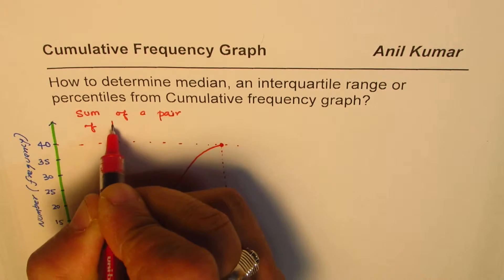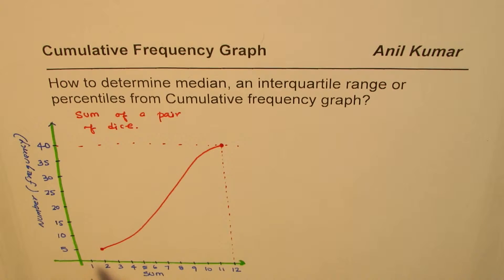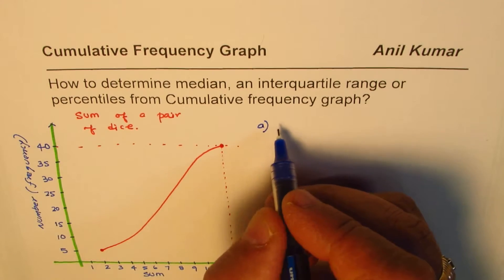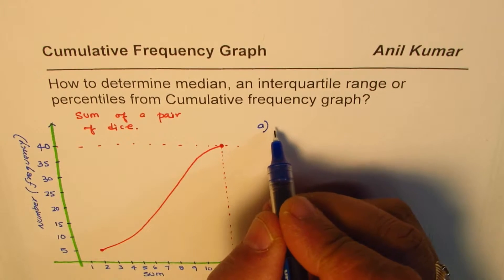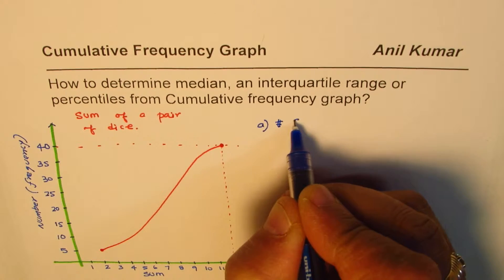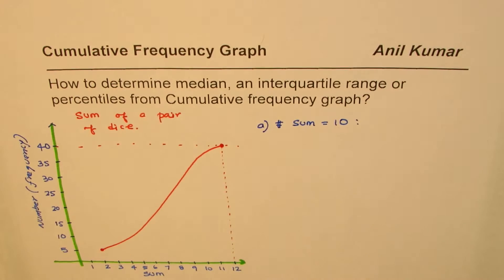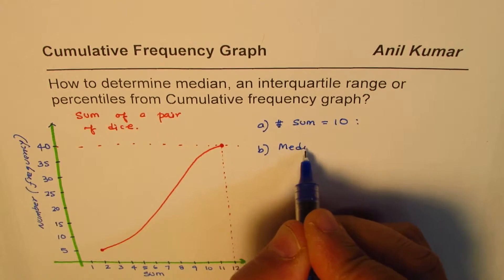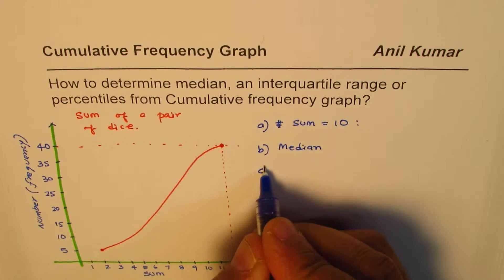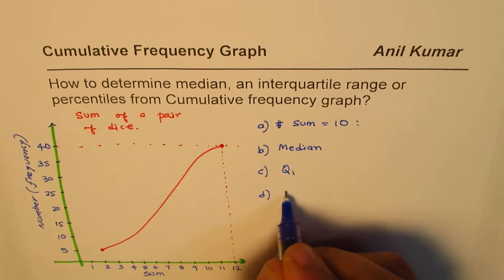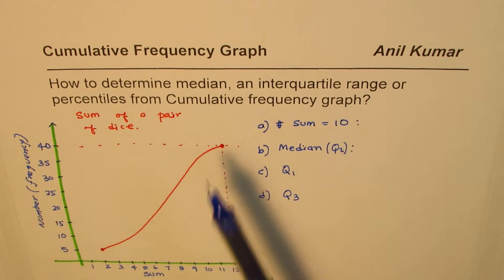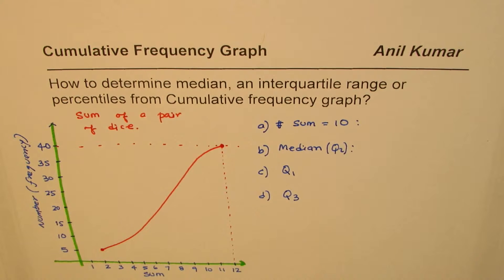Given this cumulative frequency graph, the question is: how can we answer questions like — how many times did we get a sum of 10? How do we find the median from this cumulative frequency graph? How do we calculate the first quartile and the third quartile? The median is the second quartile. That is what we are going to understand in this video.